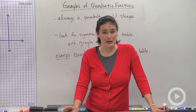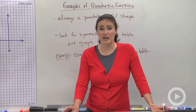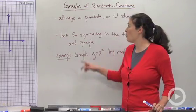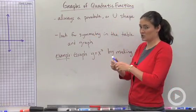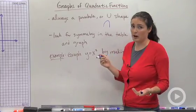So any time you see an x squared, it's not going to be a line. It's going to be a curvy U shape. Sometimes the U is going to open up, sometimes the U is going to open down. So we call it a parabola.